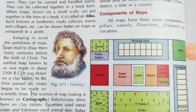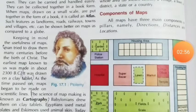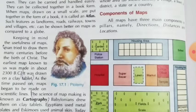Babylonians drew maps on clay tablets, Egyptians used metal plates, and Eskimos used animal skin. Today maps are drawn on computers and are accurate and improved. Ptolemy, an Egyptian geographer, contributed a lot in making map drawing a science. He was perhaps the first to show the north line at the top of his map, as you can see in figure 17.1.